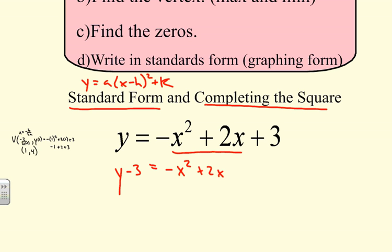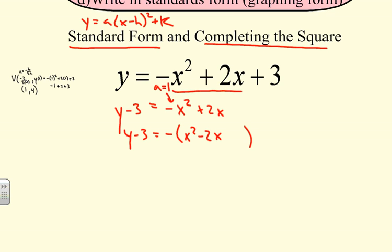To complete the square, the leading coefficient must be 1, so we factor out negative 1, giving us x squared minus 2x. We're missing a c value, so we find c by taking the b value, dividing by 2, and squaring it.